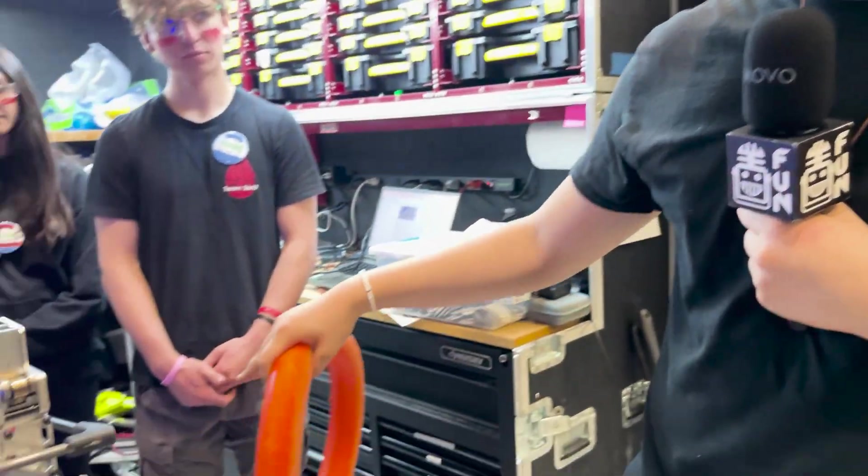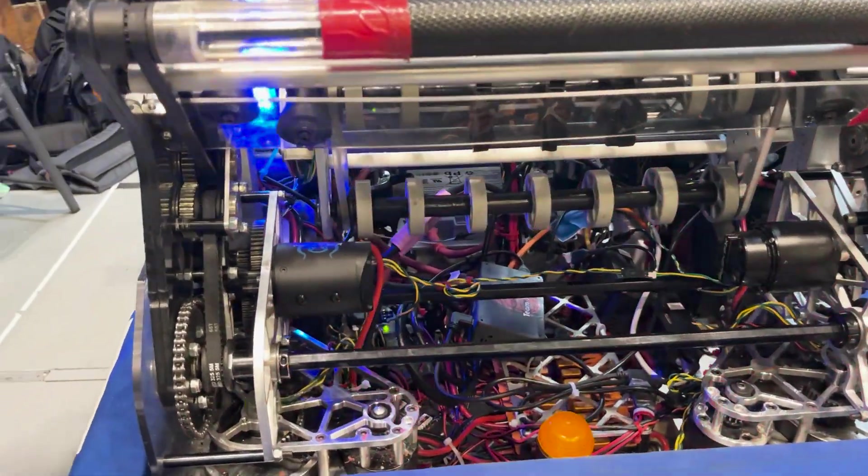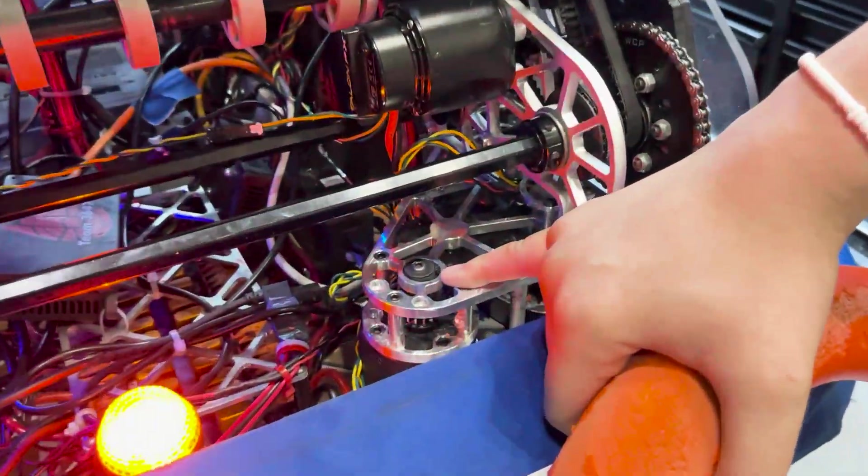Okay, so at the start of our build season we began with a 24 by 24 inch drivetrain with Mark 4i SDS swerve modules. We initially had L3 but we made a conversion over to the L4 with Krakens as our drive.